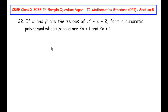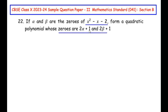The 22nd question is from the polynomials chapter. If alpha and beta are zeros of x squared minus x minus 2, form a quadratic polynomial whose zeros are 2 alpha plus 1 and 2 beta plus 1.